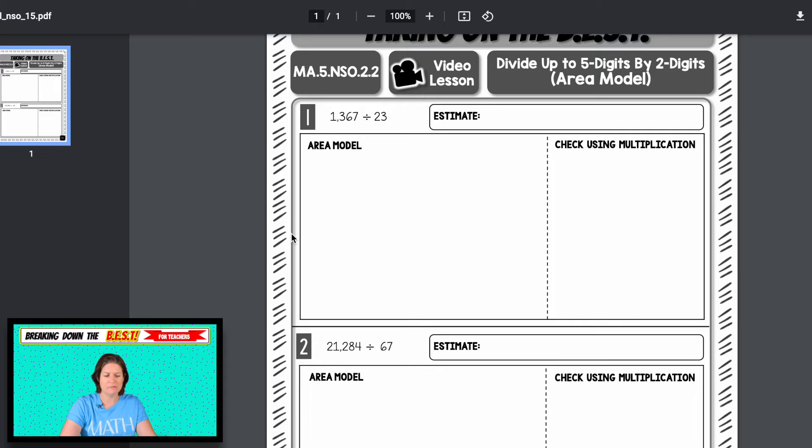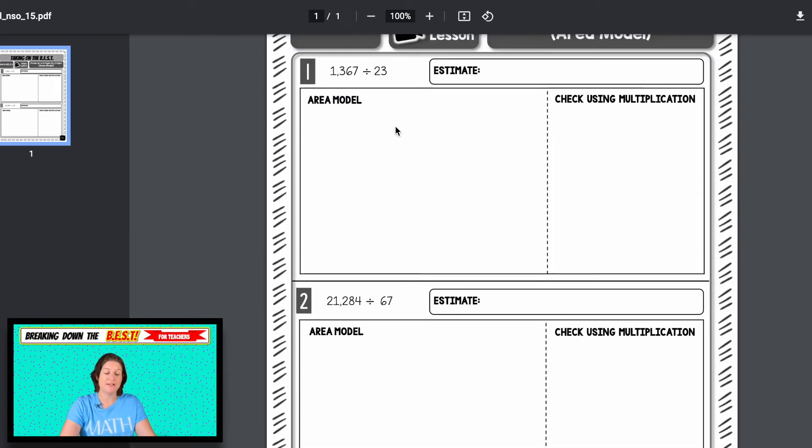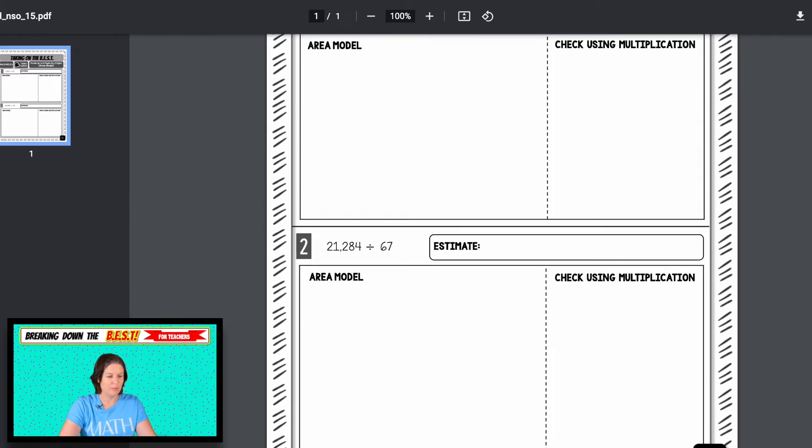However, the standard did say students can choose whichever one works for them, whichever one they prefer. So if I click on the video lesson, student printable, you can see here is our problem. This is a four digit divided by two digits. And here's a five digit divided by two digits. We estimate first, we'll break down how to solve using the area model. And if you're like, I don't know how to solve it using the area model, watch the video lesson, because I break it down there. And then we check using multiplication.